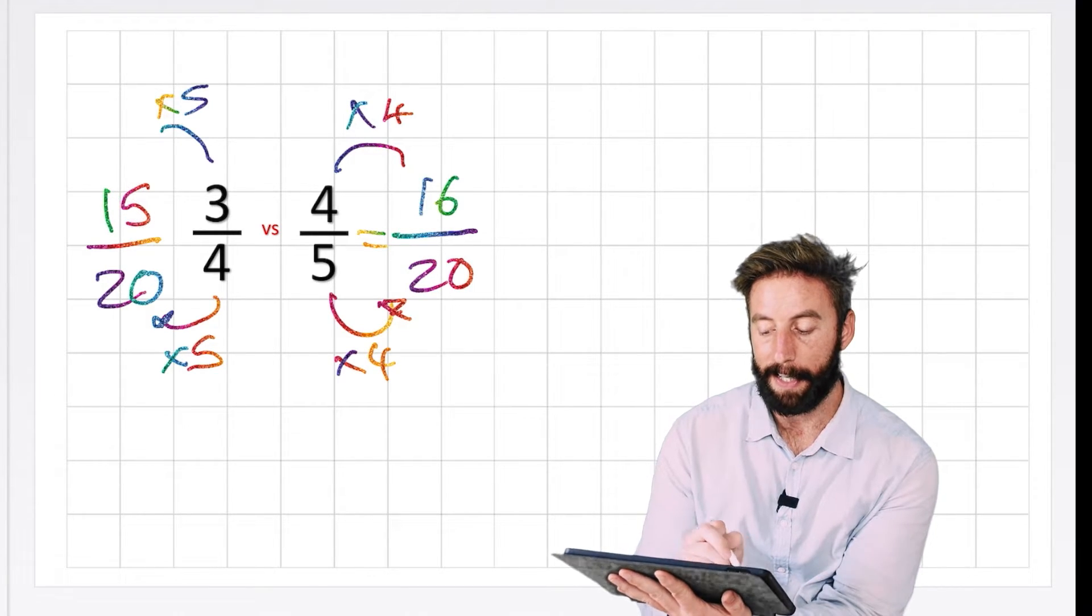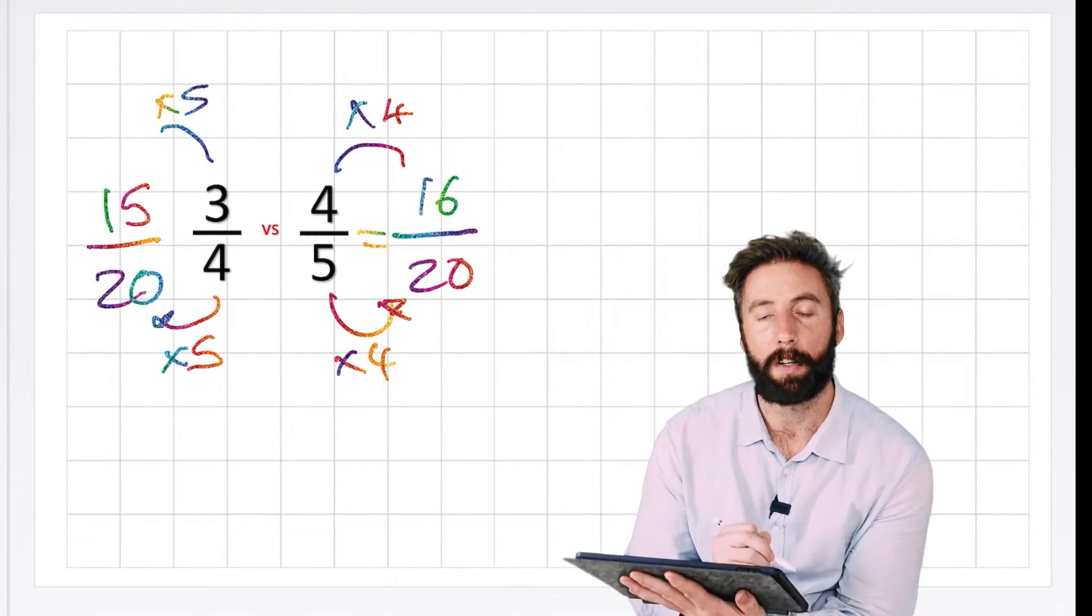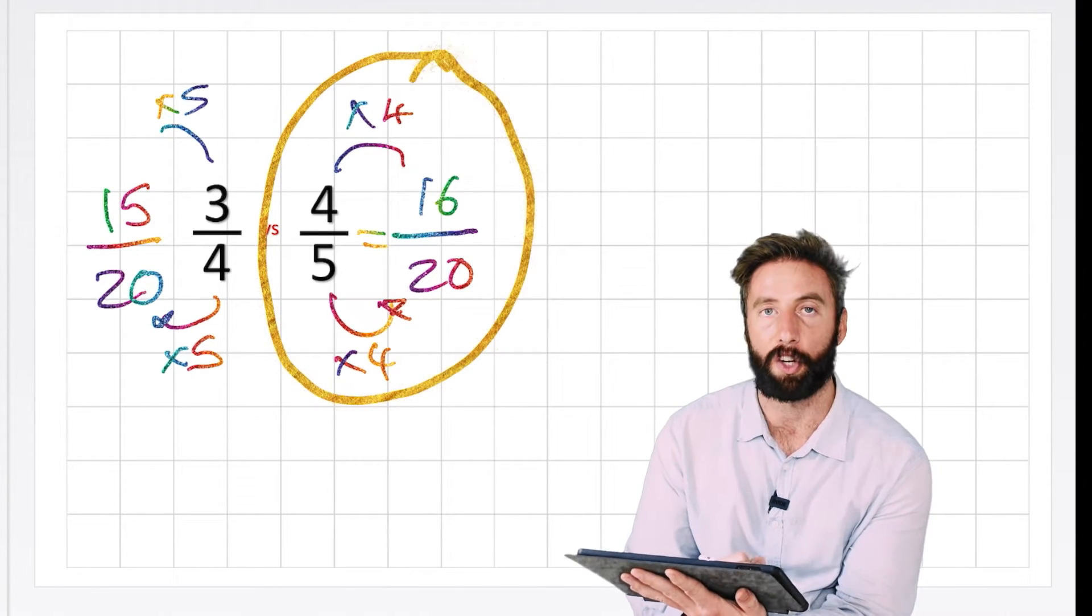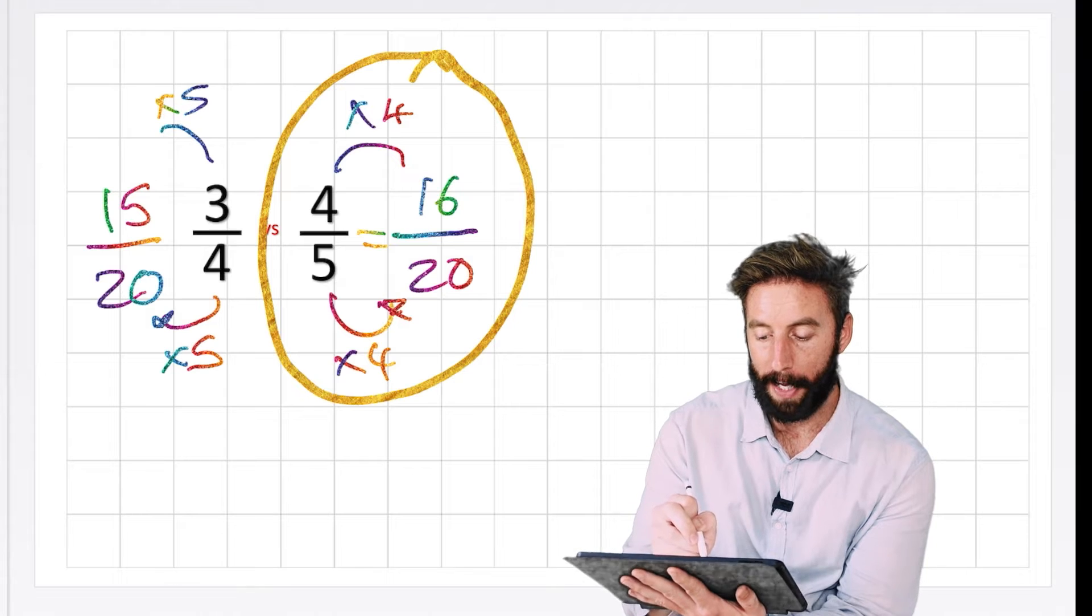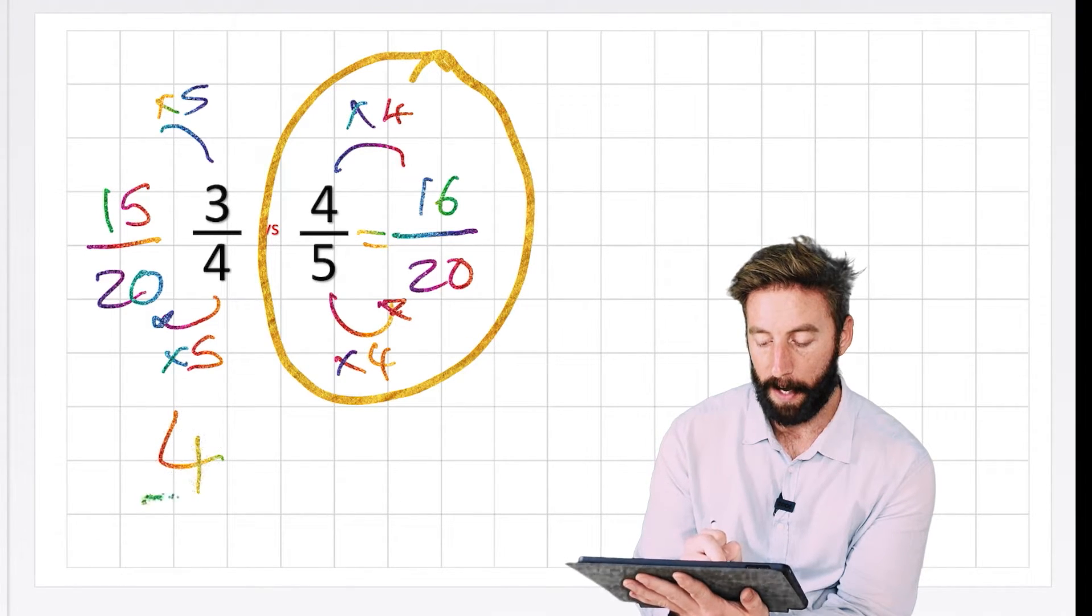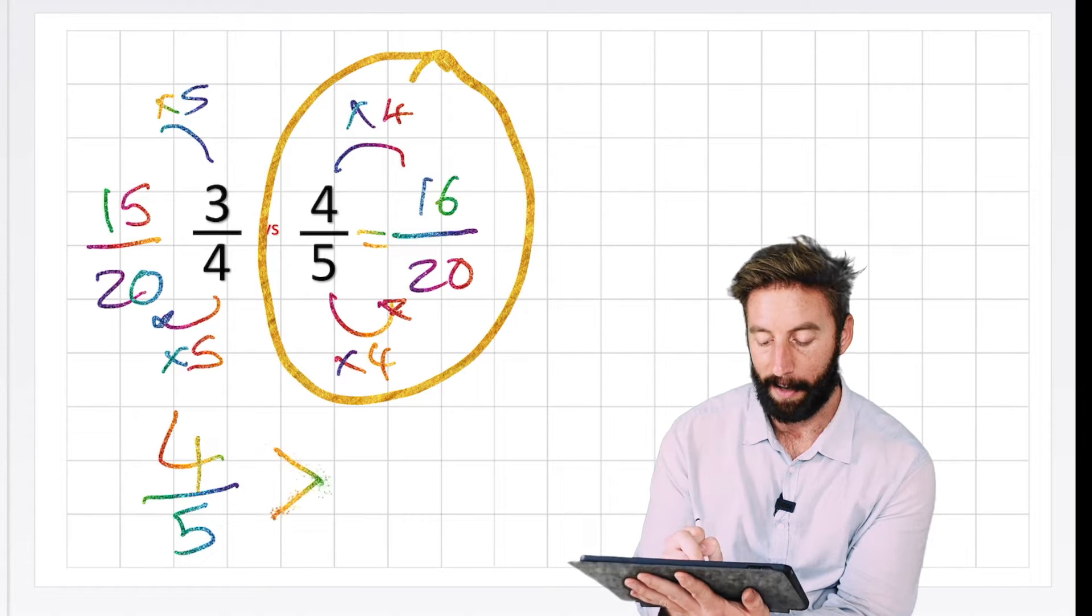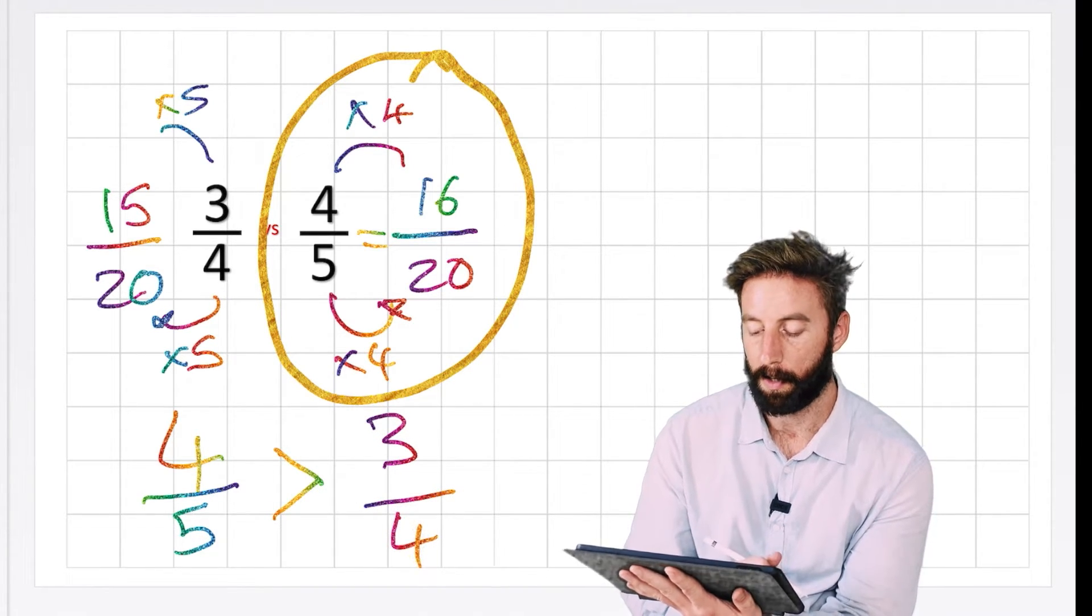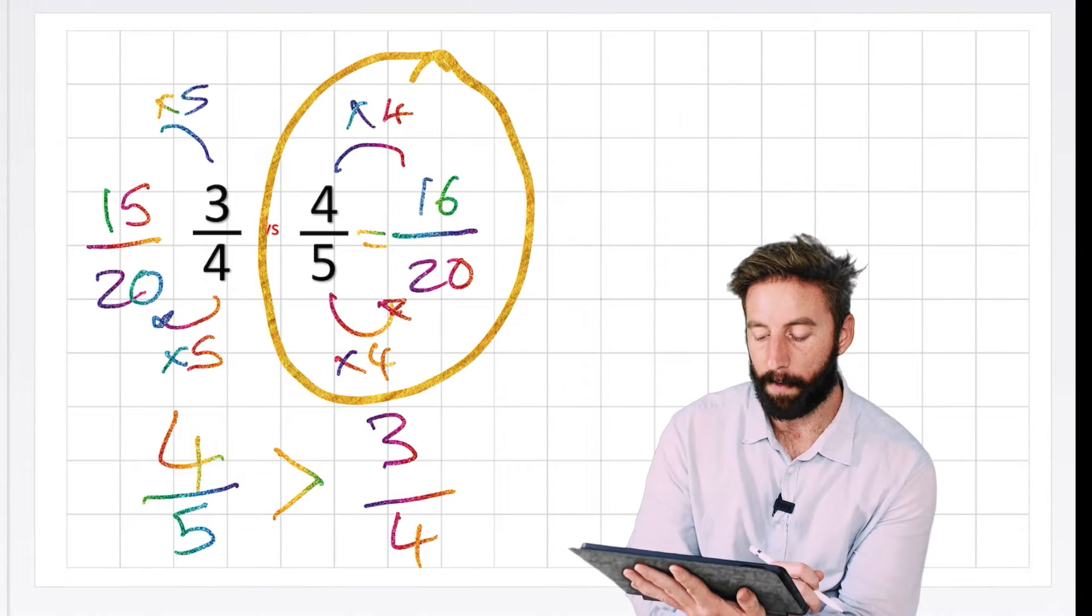So I have 15 twentieths or 16 twentieths. So now I can see that the 16 twentieths has a greater value. So again, to answer my question, I need to write 4 fifths is greater than 3 fourths or 3 quarters. Okay, that was slightly harder. We had to find a common factor.